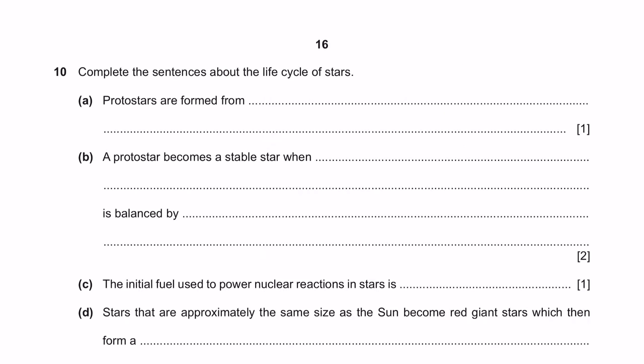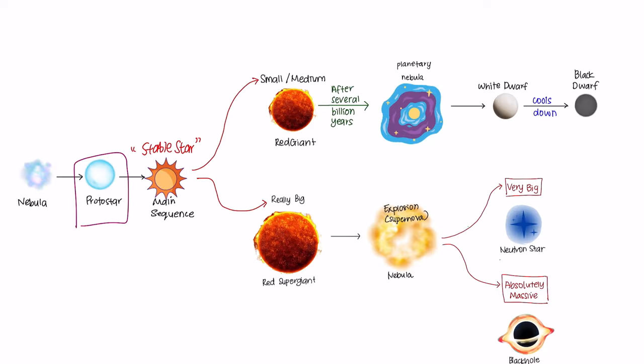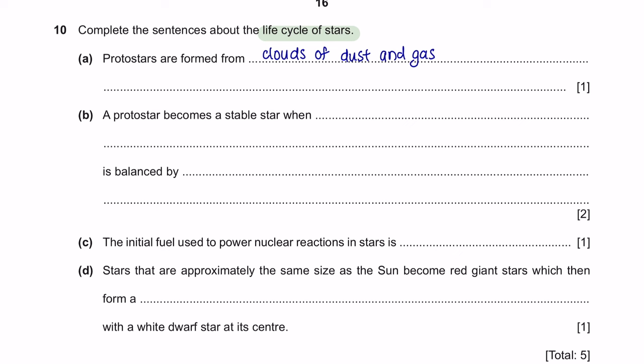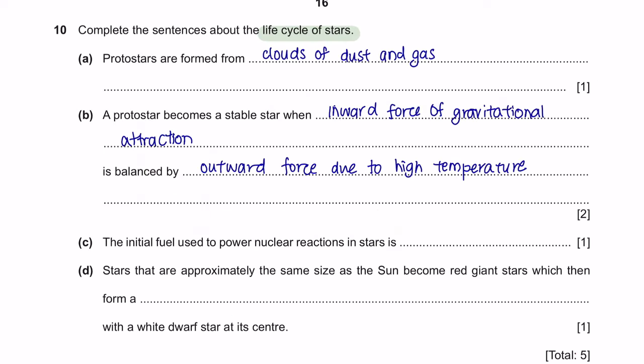The final question 10. Complete the sentences about the life cycles of stars. So, I've made a video on the life cycles of stars. Please watch that if you would like to learn more in detail of this chapter. So, this here is a protostar. Protostars are formed from clouds of dust and gas. Question B. A protostar becomes a stable star when? So, this is a stable star. And how does a protostar become a stable star? This happens when the inward force of gravitational attraction is balanced by the outward force due to high temperatures. When these both are balanced, it becomes a stable star which is the Sun in our solar system.